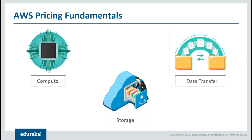Next we have storage. What AWS does is it charges you per gigabyte. Even if you use very less space, you'd be paying only for that space, as little as one GB. You don't have to worry about scaling because if you are using more resources, you'd be paying accordingly. When you talk about data transfer, AWS charges you per gigabyte and it charges you only for the data that goes out. Based on all these points, AWS has built various pricing models.